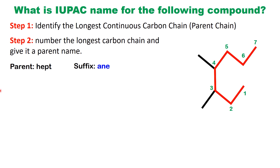The parent name is based on the number of carbons in the longest chain, combined with the suffix "-ane". Since the chain has 7 carbons, the parent name is heptane.